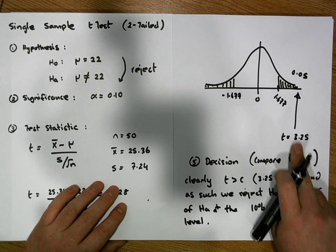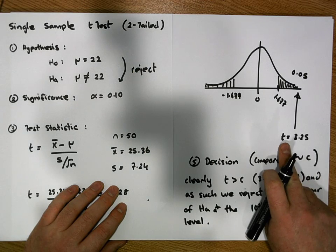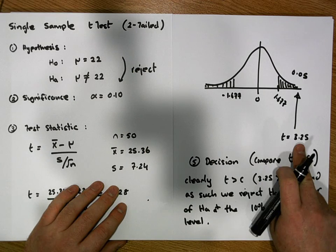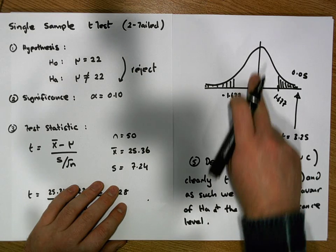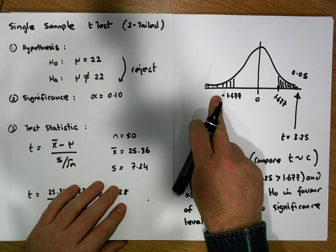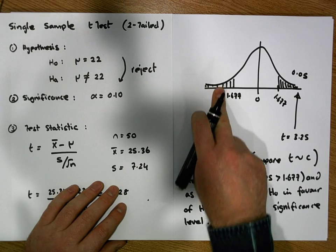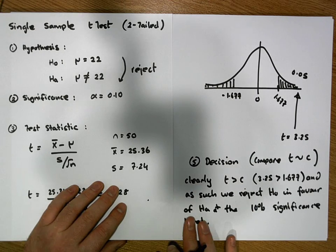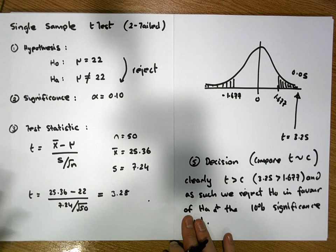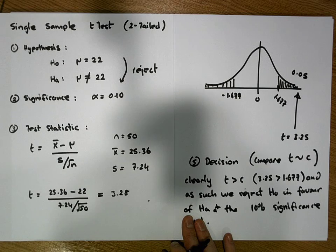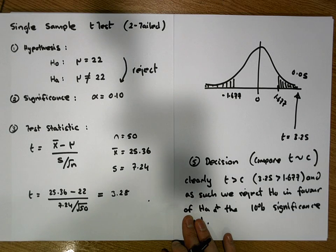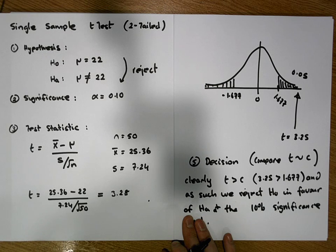Had we found that the mean waiting time was less than 22 minutes, that would also have been evidence to reject the null hypothesis. Thanks guys — this was Jonathan Lambert with the Mathematics Development and Support Service at the National College of Ireland, and I hope this video was helpful.